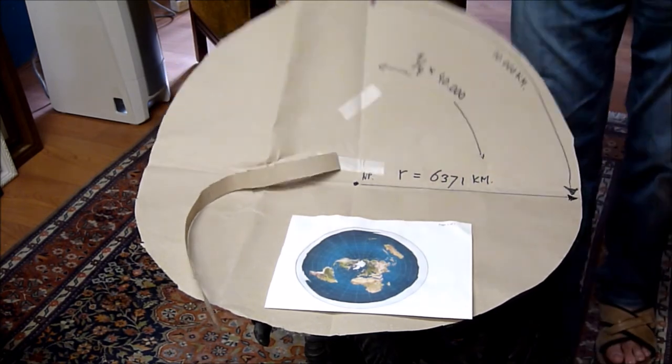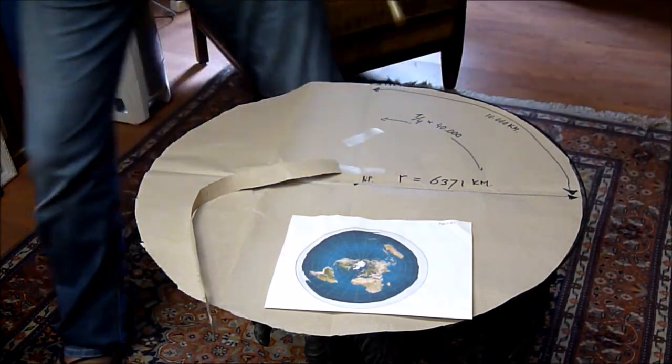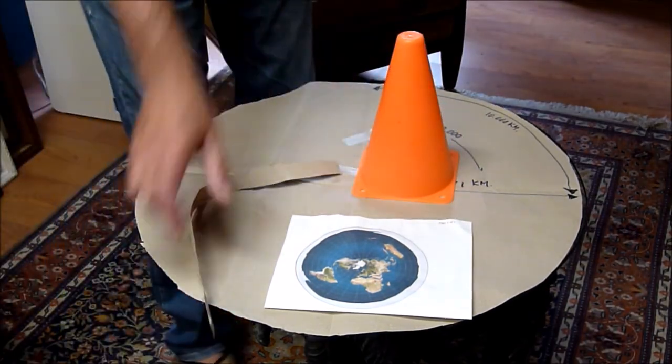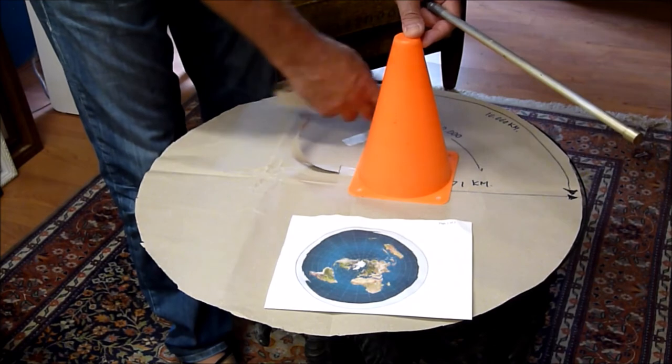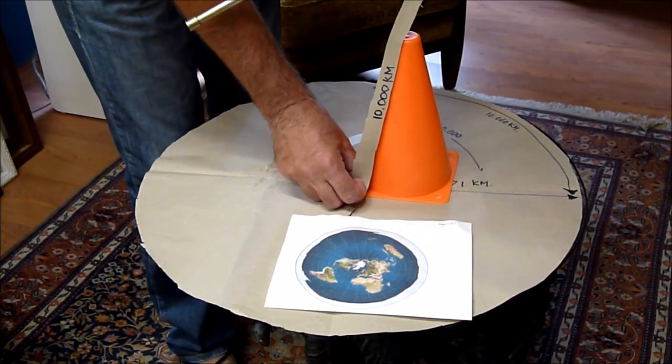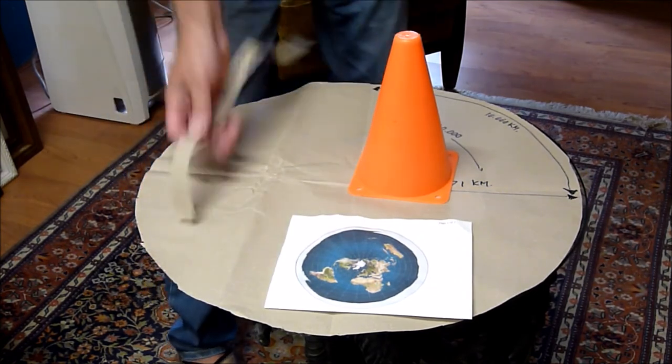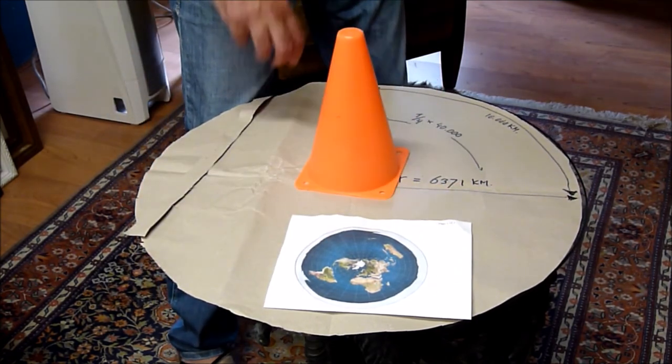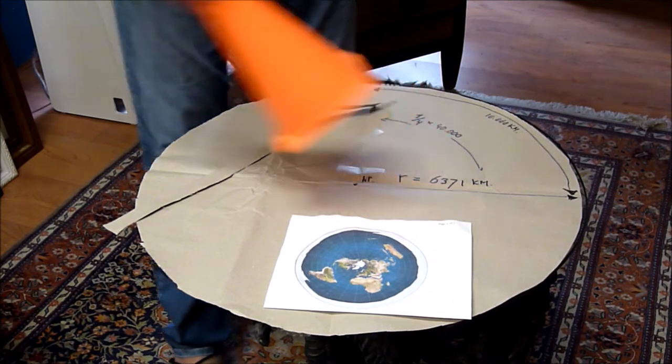Ja, het zou nog een konus kunnen zijn. Maar dan worden wij allemaal konus. Want die kan natuurlijk 40.000 kilometer rond zijn hier, en die zou zo naar een punt toe 10.000 kunnen zijn. Dat is nog mogelijk. Maar ik geloof niet dat iemand dit echt serieus overweegt als het alternatief.